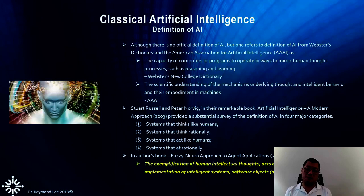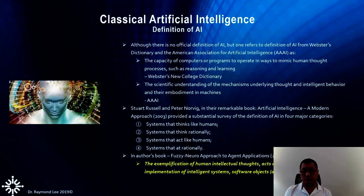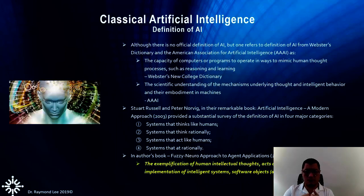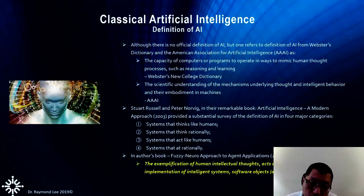In terms of the AAAI — the American Association of Artificial Intelligence — one of the oldest organizations, AI is defined as the capacity of a computer or program to operate in a way that minimizes — meaning to simulate — human thought processes such as reasoning and learning. As I mentioned in many seminars and courses, learning and reasoning are two correlated things in human intelligence — we cannot separate one from the other. Together with knowledge, we have knowledge, reasoning, and learning.